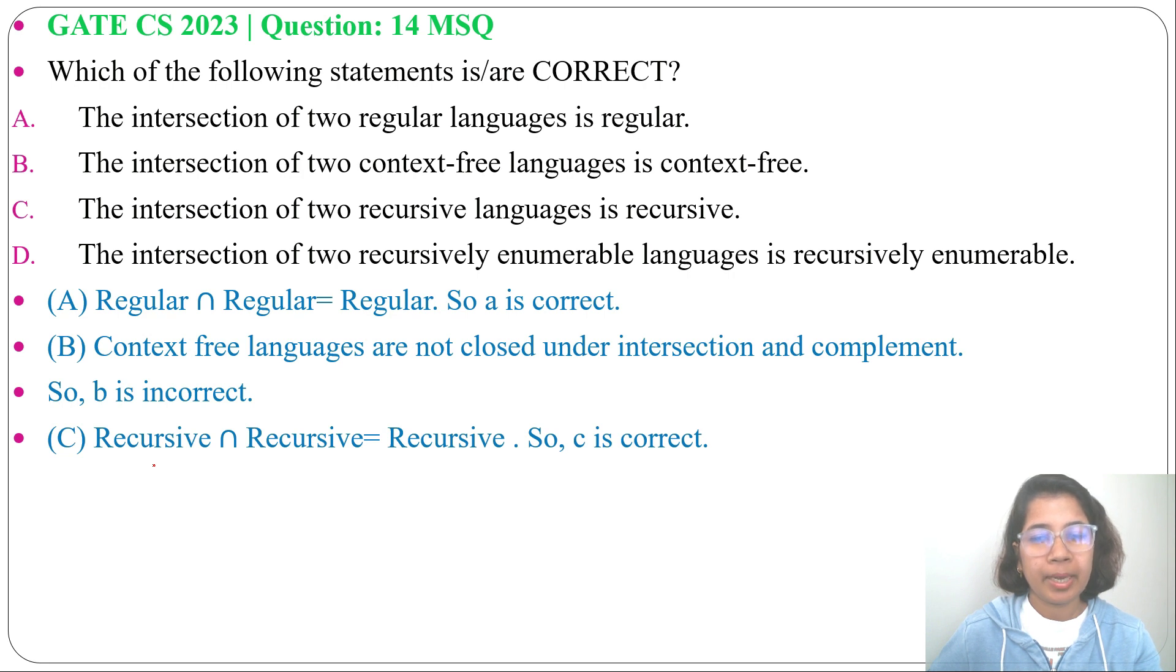Next option D: The intersection of two recursively enumerable language is recursively enumerable. This is true. Recursively enumerable language is also closed under intersection.